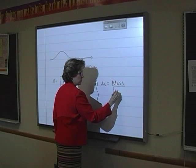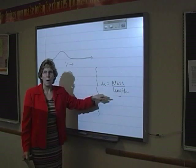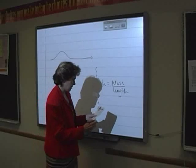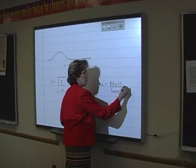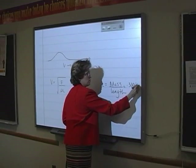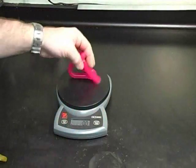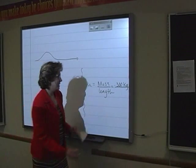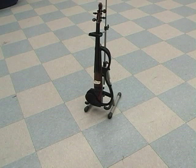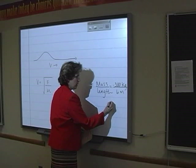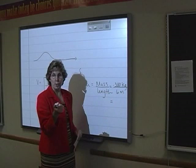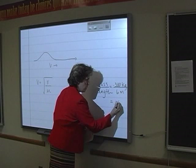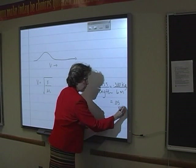I will be giving you some values to substitute into that. Imagine a string on a guitar. I'm going to randomly pick a size for our mass — the mass is going to be 0.300 kilograms. Wow, that's a heavy string. And the length is 6 meters. That's a huge guitar! So you would go on your calculator and do 0.3 divided by 6, and we get a mass-to-length ratio of 0.05 kilograms per meter.